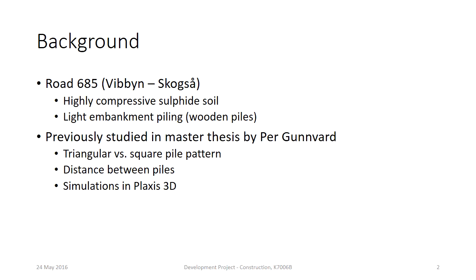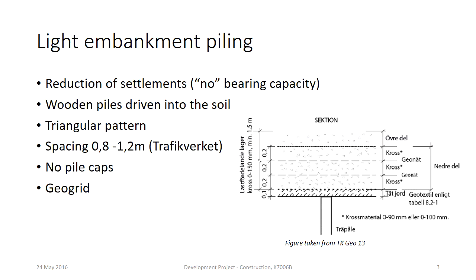When roads and railways are to be built on soils with a high degree of compressibility, light embankment piling with wooden piles is commonly used, especially in northern Sweden. First the top soil is excavated, then wooden piles are driven into the soil. The spacing between the piles is prescribed by Trafikverket to between 80 and 120 cm. No pile caps are installed, but two layers of geogrid are used in the lower section of the embankment to transfer the loads to the piles.